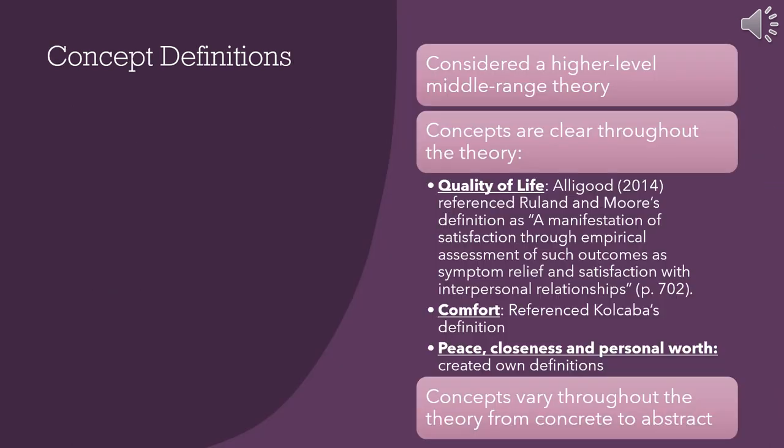The Peaceful End-of-Life Theory is considered a higher-level, middle-range theory due to its level of abstraction and complexity. Ruland and Moore defined quality of life as a manifestation of satisfaction through empirical assessment of outcomes such as symptom relief and satisfaction with interpersonal relationships. They referenced Kolkaba's definition for comfort and created their own definitions for peace, closeness, and personal worth. The concepts range from concrete, such as pain and comfort, to abstract, such as dignity.